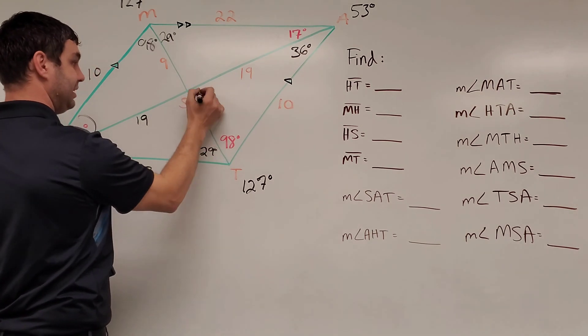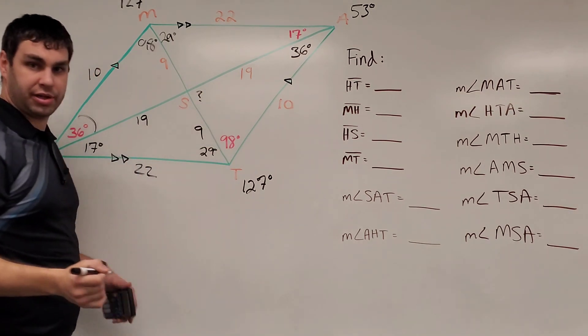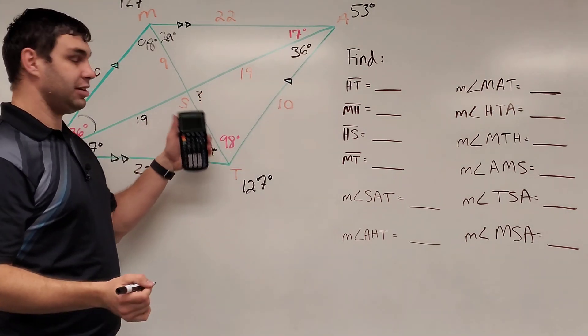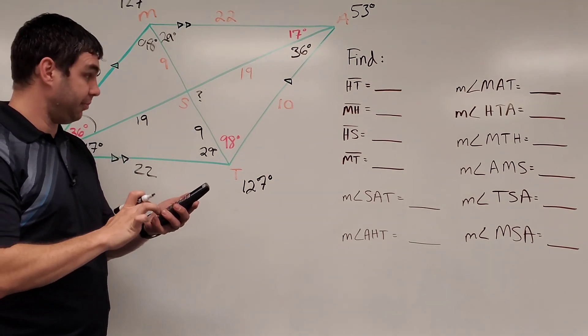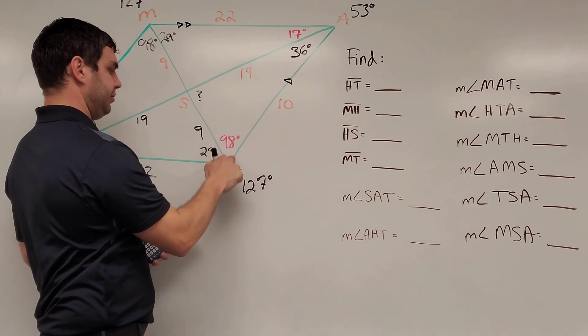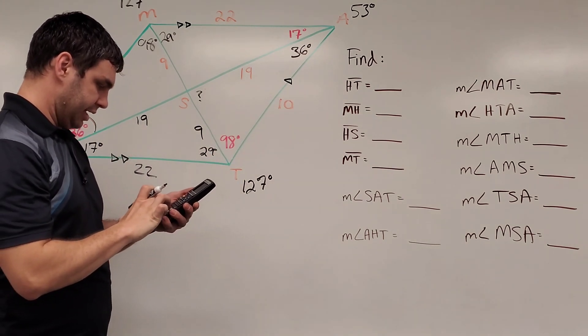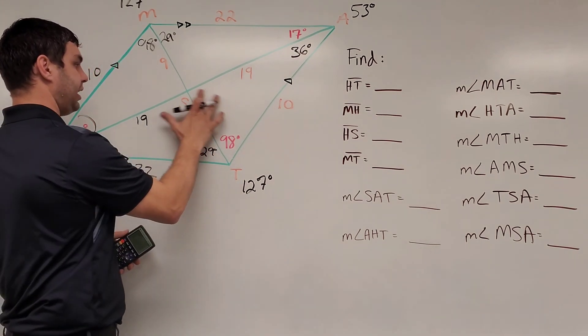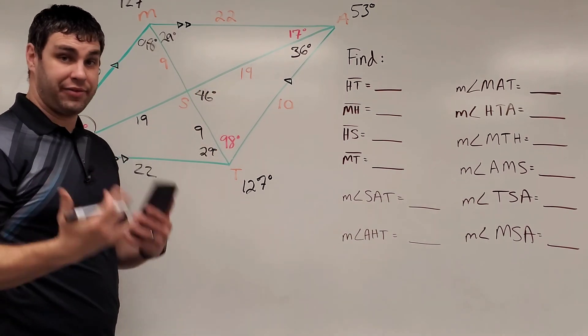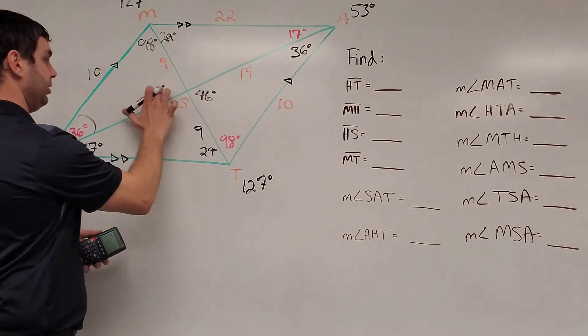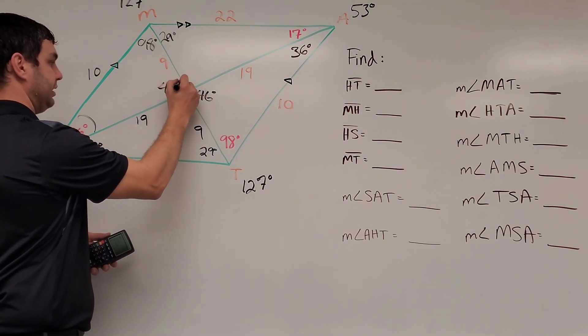This is a 36, 98, and we're missing this angle right there. I'll put a question mark. To figure it out, I know that triangle has 180 degrees, so I can do 180 minus 36 minus 98, and that gives me 46 degrees left. All right, so here this would be 46 degrees there, and it would have a vertical angle of this one, also 46 degrees. Okay?